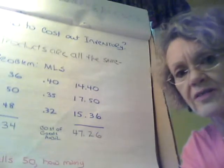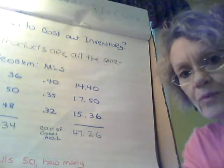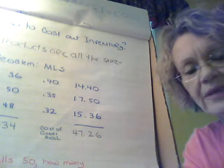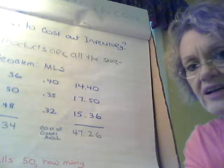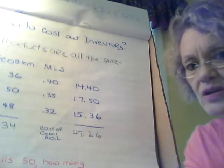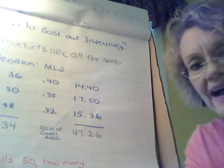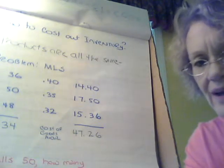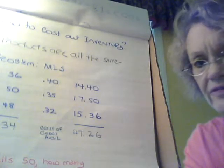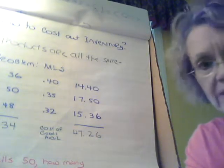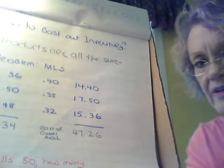Now if these sodas were all different, we wouldn't have this issue because we could tell one brand from another — but they're all the same. So she can't tell when she puts them in the cooler what she's got in there, and when she pulls one out she doesn't really know which one she's using. So these methods are an allocation method, not specifically identifiable — that's for something like cars. We're going to skip that method; I'll mention it but I want to talk about the others.